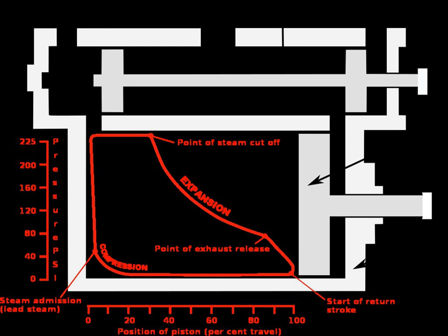Cutoff is one of the four valve events. Early cutoff is used to increase the efficiency of the engine by allowing the steam to expand for the rest of the power stroke, yielding more of its energy and conserving steam. This is known as expansive working.